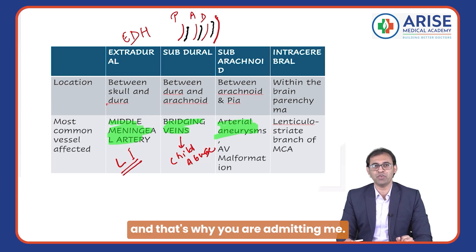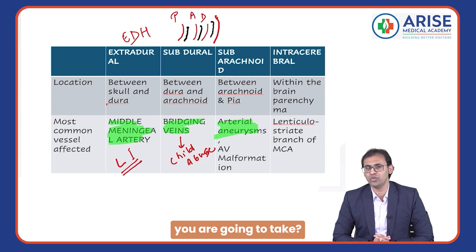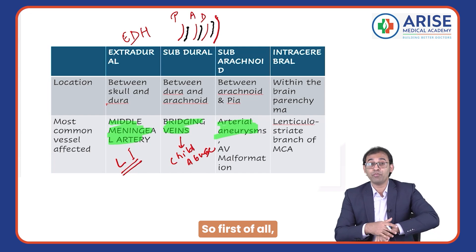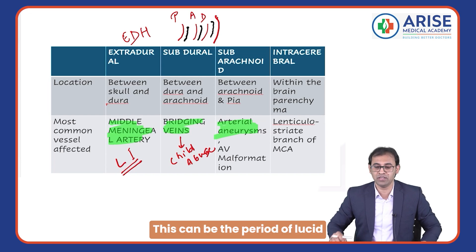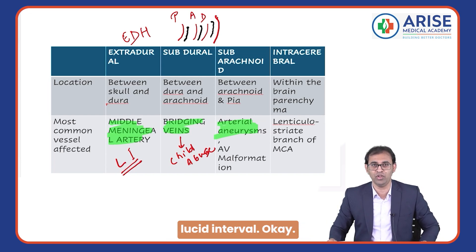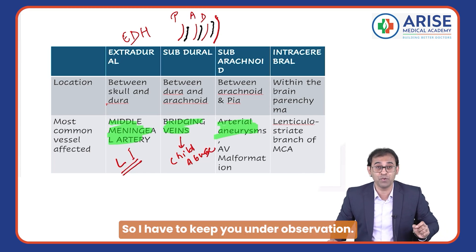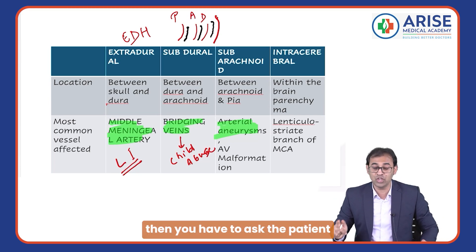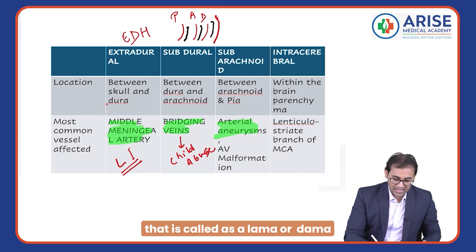Now suppose the patient refuses further admission, saying 'Doctor, you just want to make money, I want to go home.' What decision do you take? First, you must explain to the patient that you are suspecting extra dural hemorrhage and that this may be the lucid interval — it is possible they may go into unconsciousness again, so you must keep them under observation as this can be dangerous.